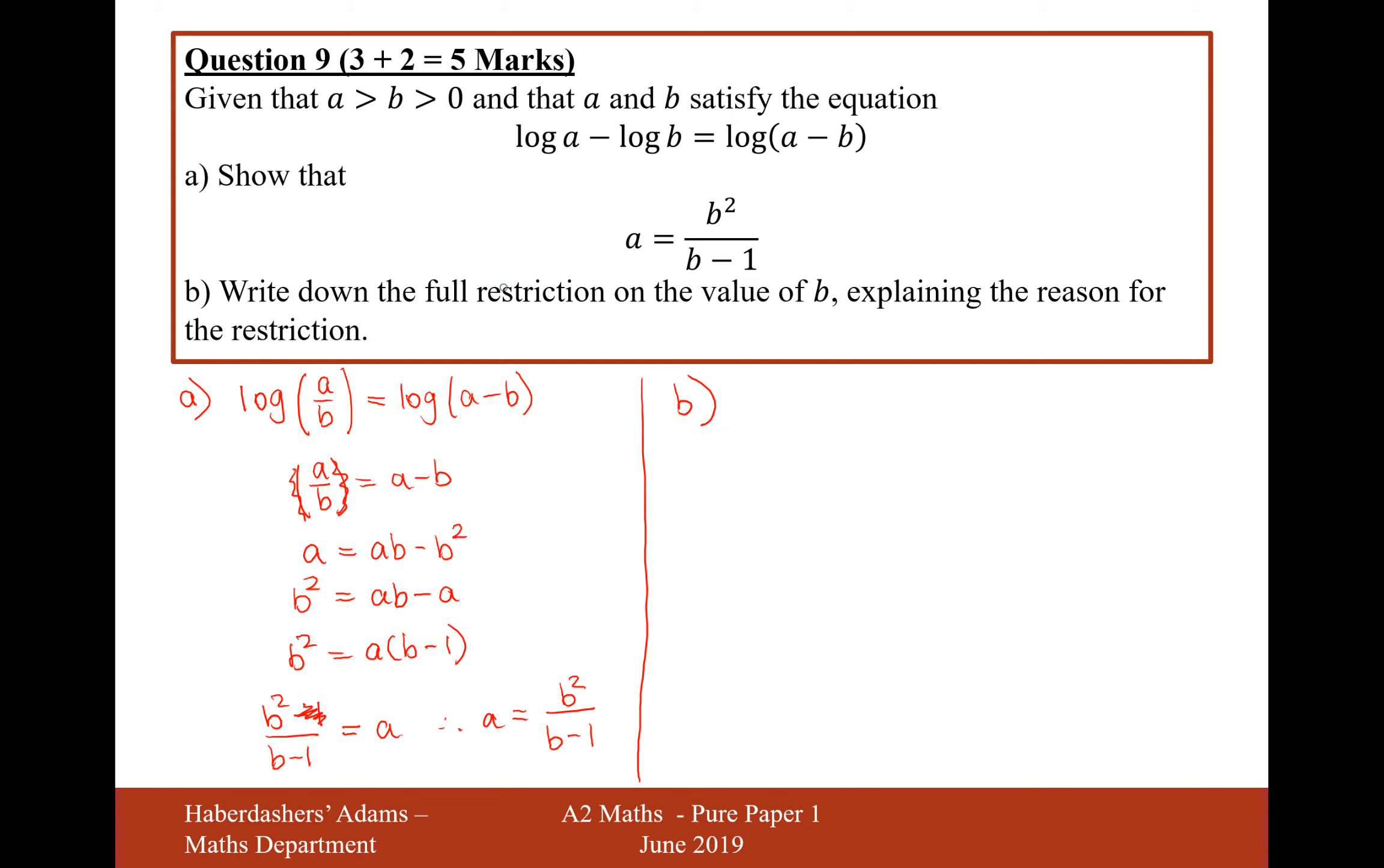I'm moving on to part b now. Write down the full restrictions on the value of b, explaining the reasoning for the restriction.